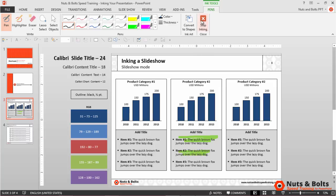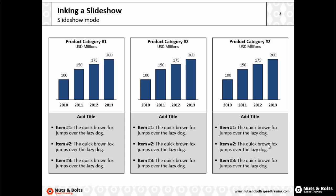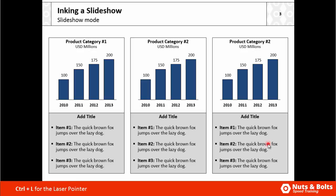In this instance, I'm just going to stop inking, hold Shift, select both of those, and hit Delete. Then I'll hit Shift-F5 for presentation mode again. In PowerPoint 2013, you also have a new laser pointer shortcut, which is Control-L on your keyboard. Hit Control-L and you can see that my mouse cursor becomes the laser.